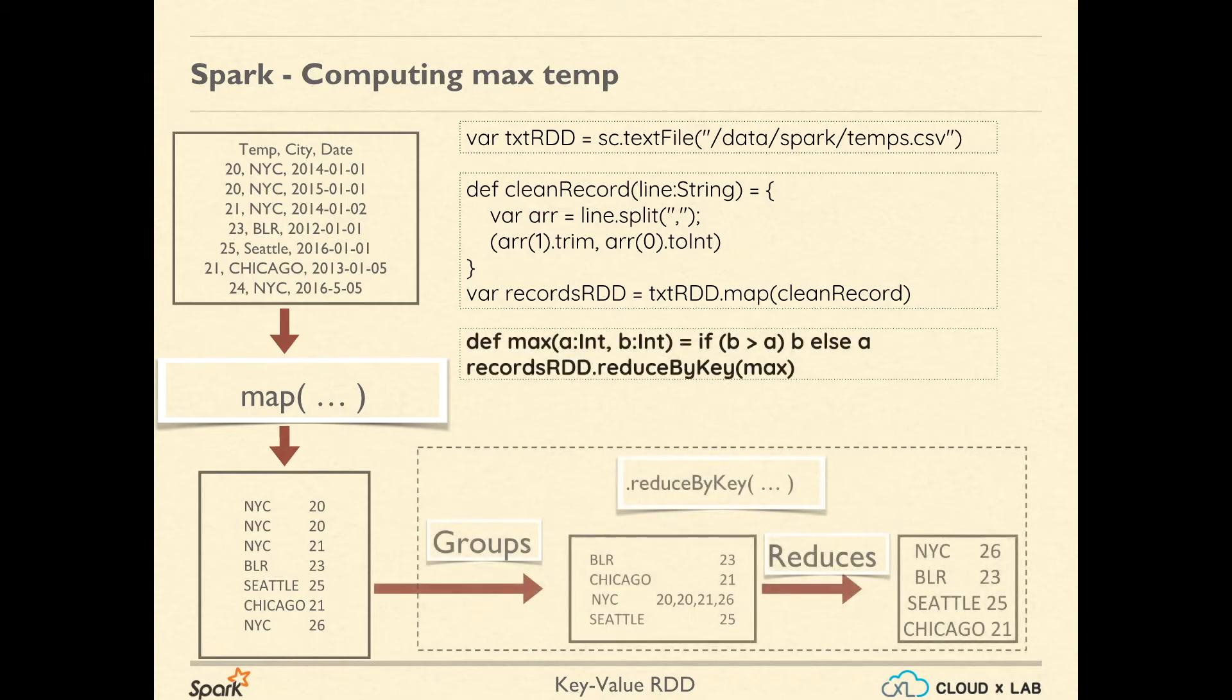Then we define a function which takes two integers as argument and returns the max of the two using an if-else condition. Finally, we call reduceByKey with this function as argument. This would first group the data by key and then reduce the values to a single value using our max function. Recall that the max function is associative and commutative. Finally, we can call an action such as collect to print, or saveAsTextFile to save the results obtained after running the lineage graph.